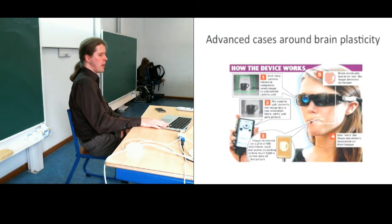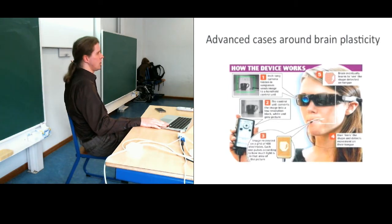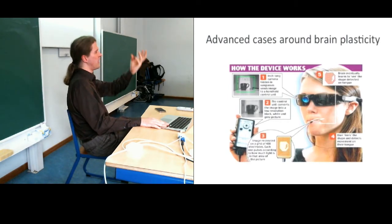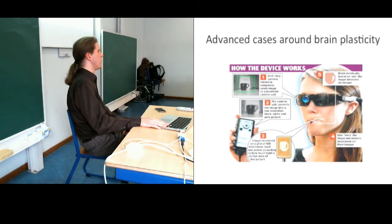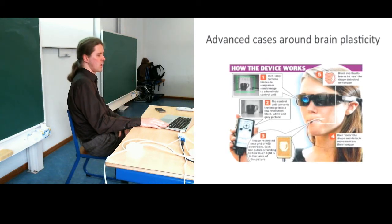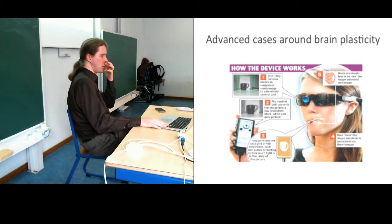A last example is a very different device — someone who became blind uses sensors on the tongue to see via a camera. After about 50 minutes, someone who became blind can actually catch a ball. It's a case of brain plasticity. This shows that there are many possible devices you can create.